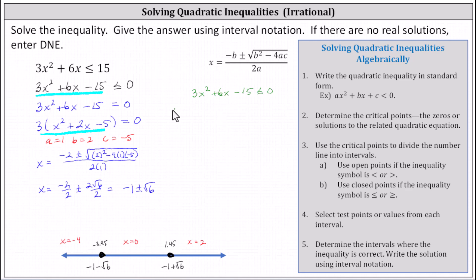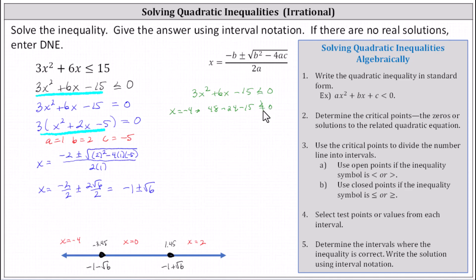Testing x equals negative four: the square of negative four is 16, three times 16 is 48, plus six times negative four gives minus 24, minus 15 — this result is positive. Any positive value is never less than or equal to zero, so the test value does not satisfy the inequality. We mark the left interval as false.